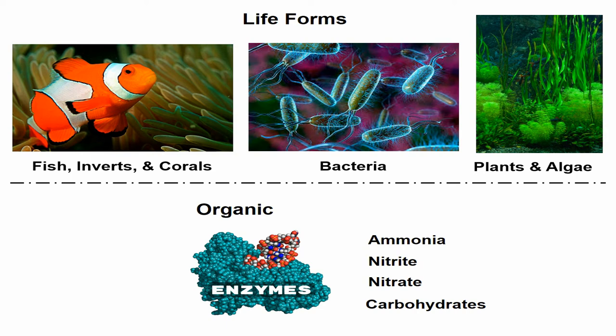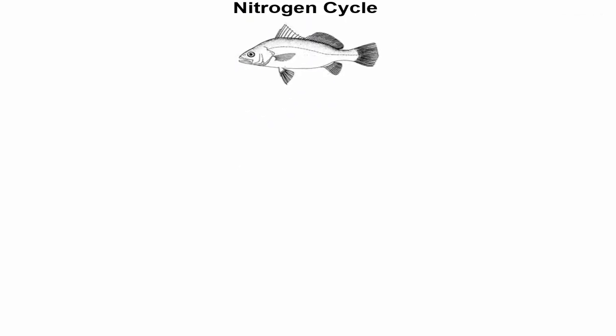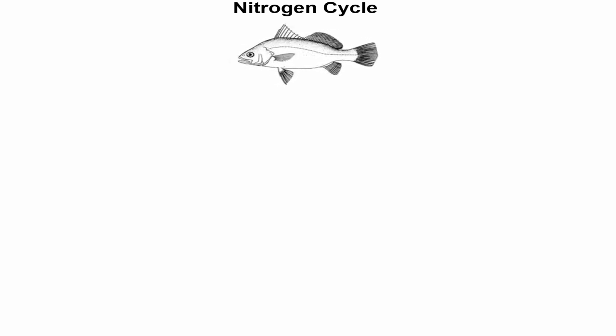To provide a balanced biological ecosystem, life forms must be pre-arranged in a specific staggered sequence to effectively convert toxins to non-toxic substances. Since we are talking about a cycle, there is no real starting point, so for the sake of creating one, let's start with what stands out most in our aquarium — our livestock.